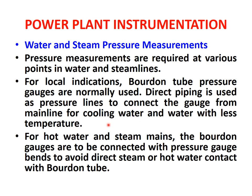For hot water and steam mains, the Bourdon gauges are to be connected with pressure gauge bends to avoid direct steam or hot water contact with the Bourdon tube. When steam at higher temperature or water at higher temperature is present, Bourdon tube pressure gauges are used but connected with pressure gauge bends so that direct contact with steam or hot water is avoided.